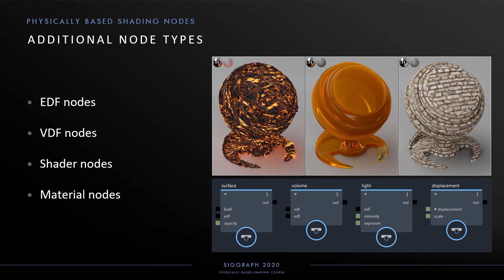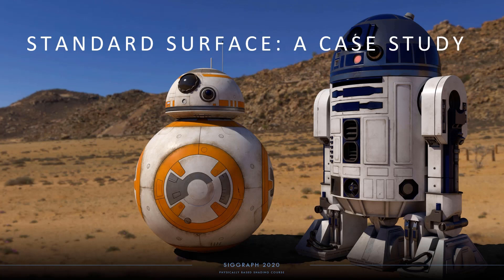Using BSDFs, EDFs, and VDF nodes together with the layering operators, we can now construct shaders by connecting these networks to shader constructor nodes. There are constructor nodes for surface, volume, light, and displacement shaders. Finally, shader nodes are connected to the root material nodes to define the material.